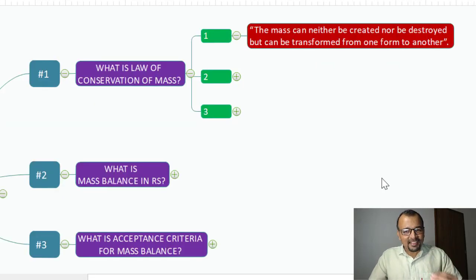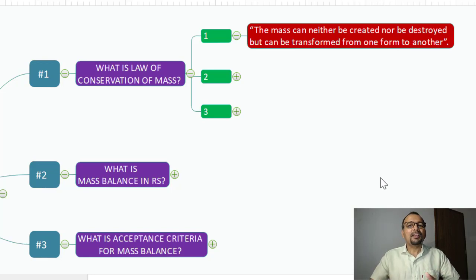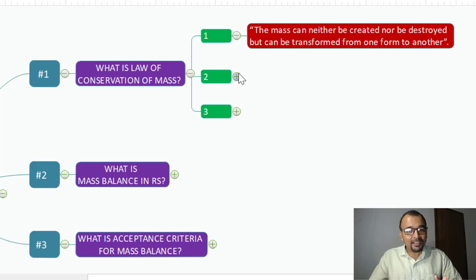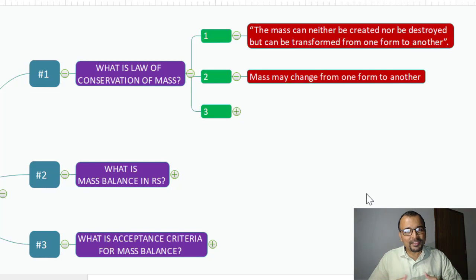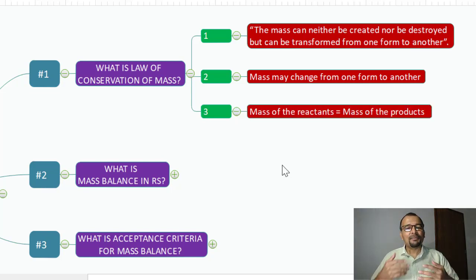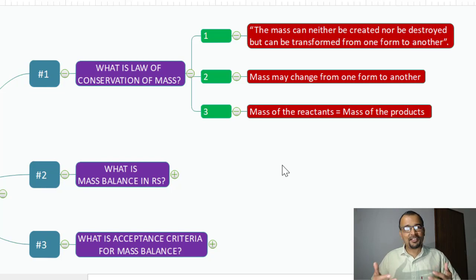The mass can neither be created nor be destroyed, but can be transformed from one form to another. This indicates that whatever substance or drug product we treat during forced degradation is going to remain constant in total mass. You can transfer the substance to its degradants and impurities, but at the end, the mass will never change — and that is why it is very important to establish the mass balance before and after the reaction.